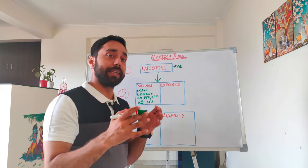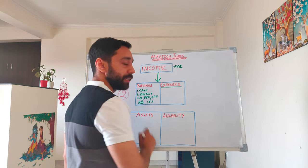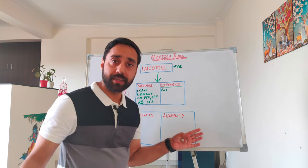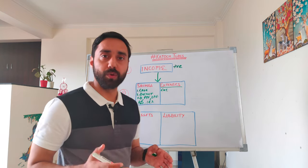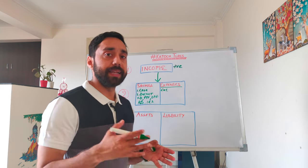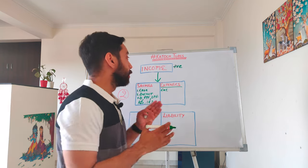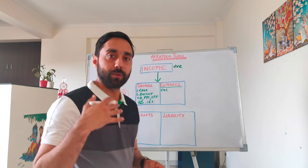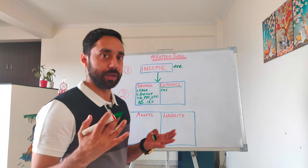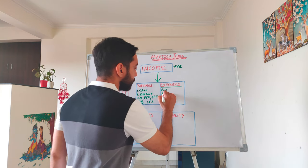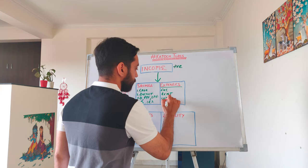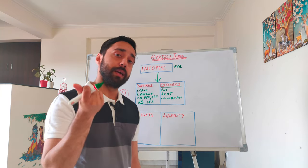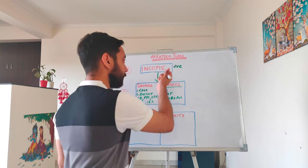Expenses are where money leaves the system — basically your leisure activities. Entertainment means any sort of leisure: watching a movie, going on a trip with friends, dining outside at a restaurant. Expenses also include your monthly rentals — the money you pay to the landlord for your flat or room. So entertainment, rent, and leisure activities are the general expenses an individual has when earning a certain income.